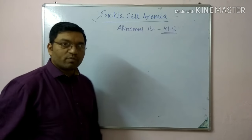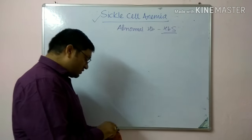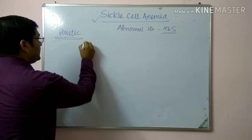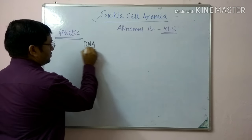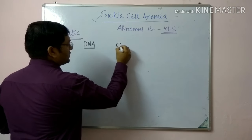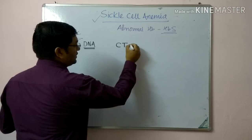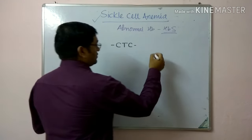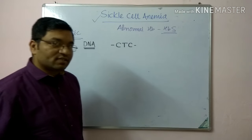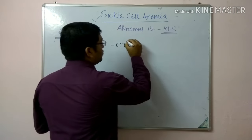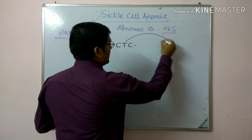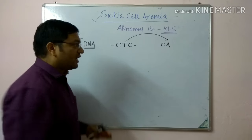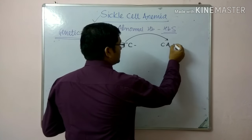If you think at the DNA level, in normal hemoglobin there is CTC, but in hemoglobin S or sickle cell anemia there is a mutation — this thymine is replaced by adenine, resulting in CAC at the DNA level.